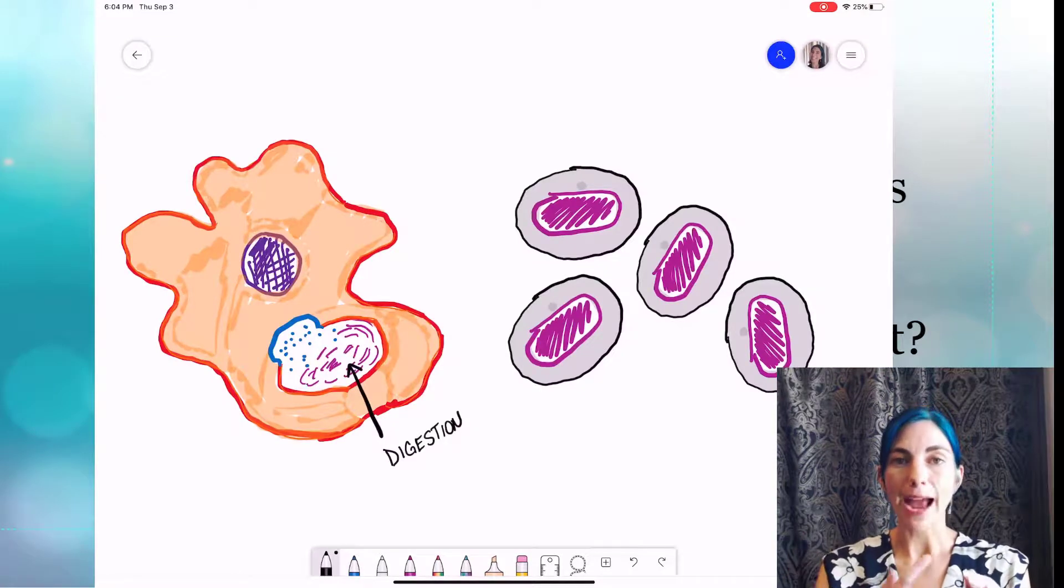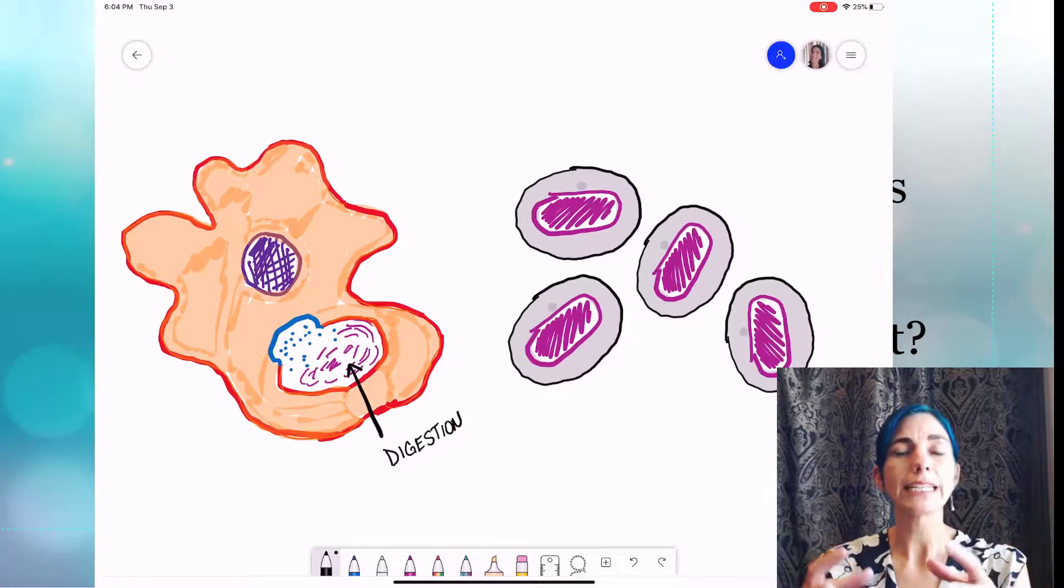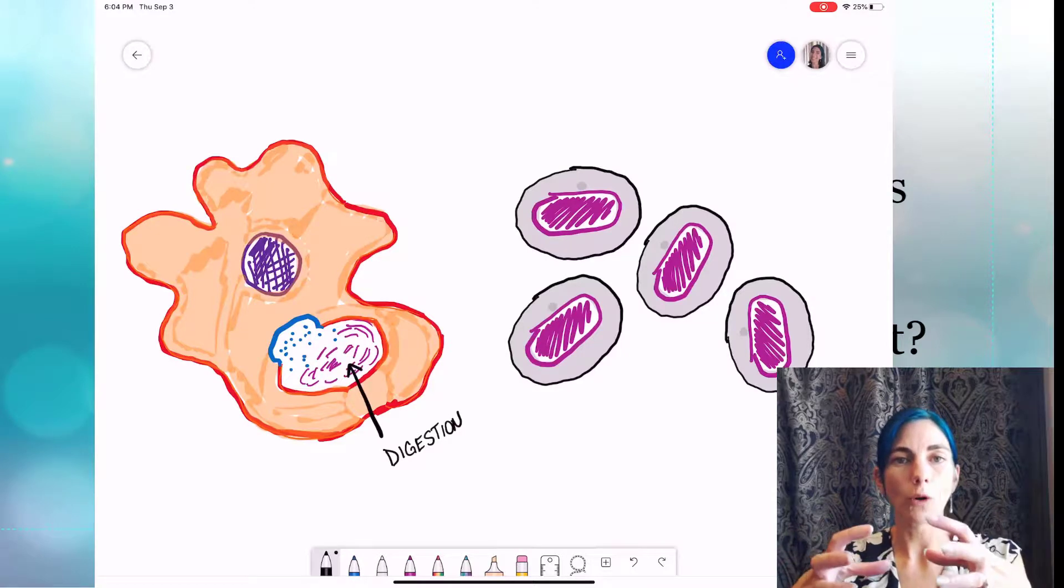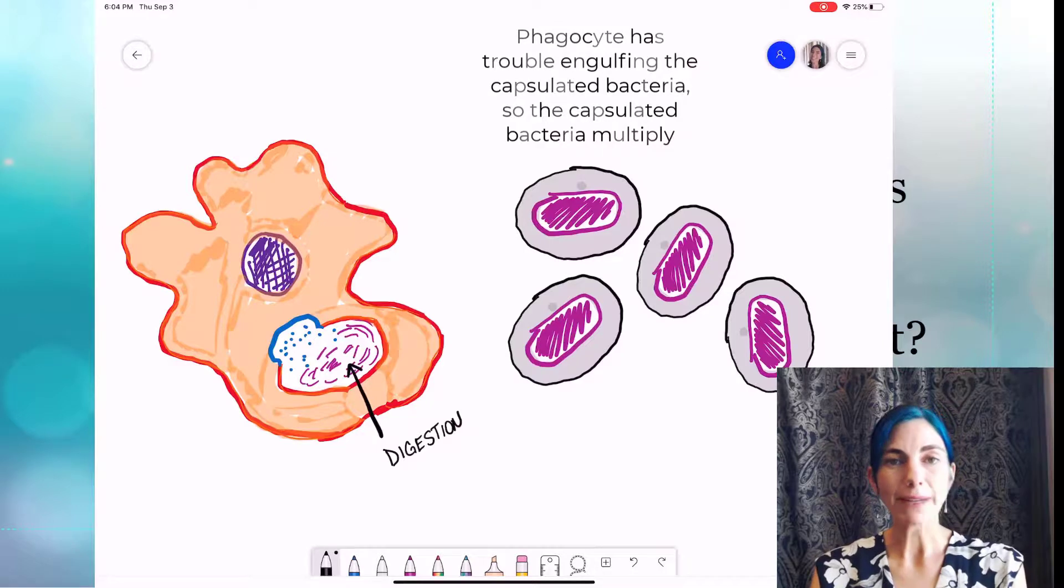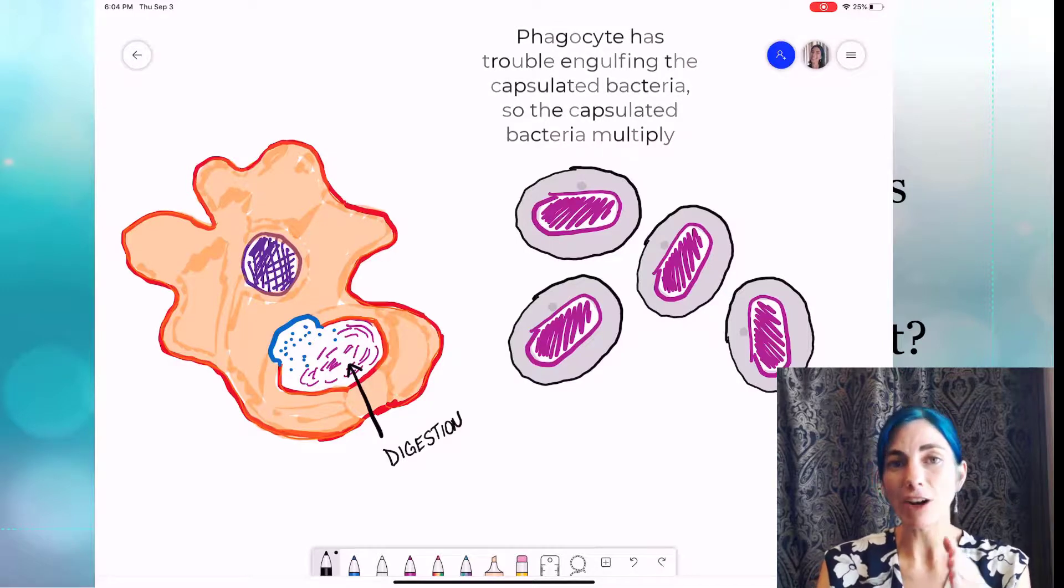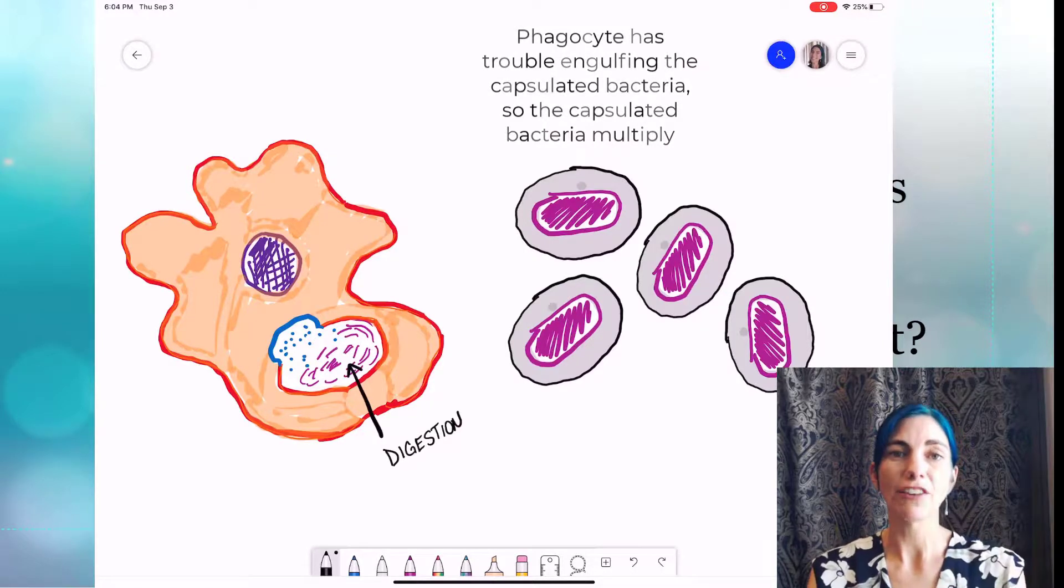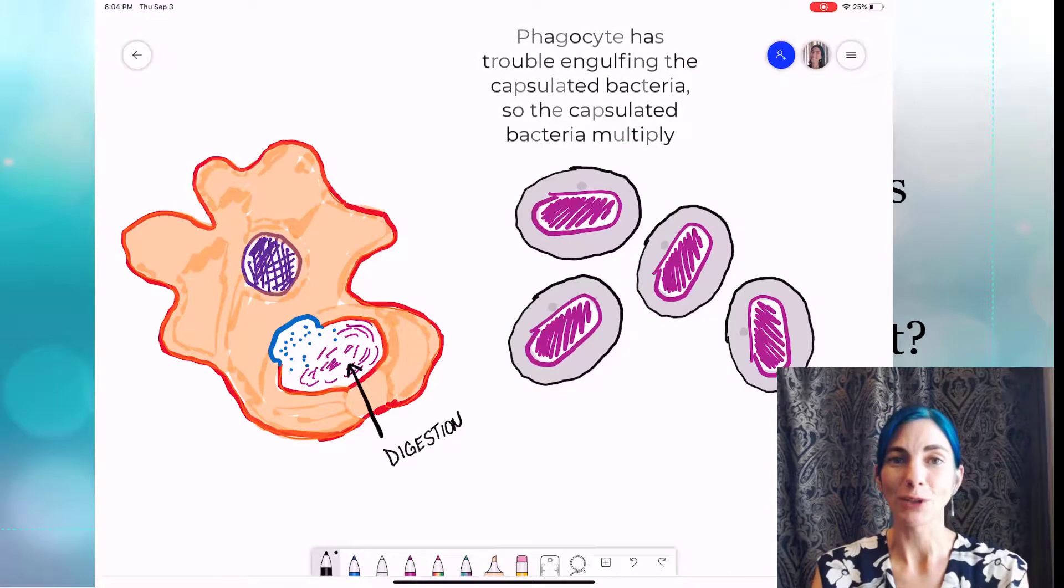And the same thing is true here. If a bacterium is encapsulated it becomes really difficult to grab it, hold it, and therefore phagocytose it. So what happens is that our ability to eat our problems becomes severely hampered by the capsule. So do we have any counter defense to it?